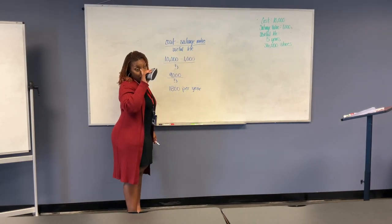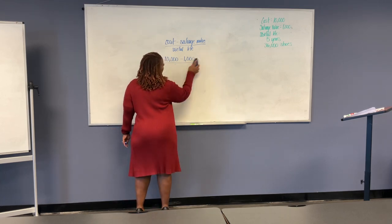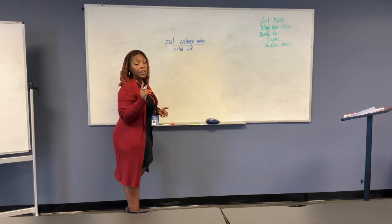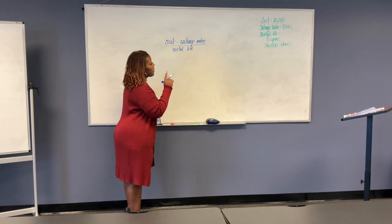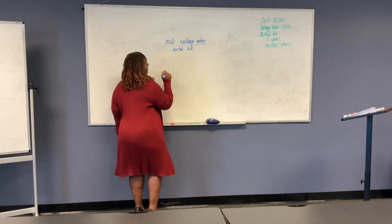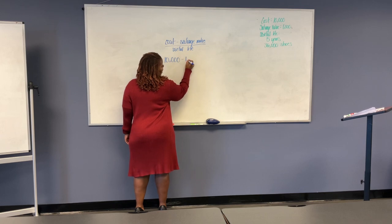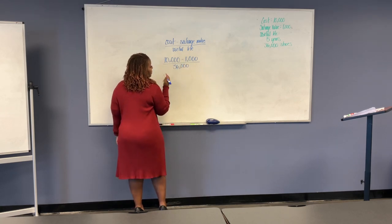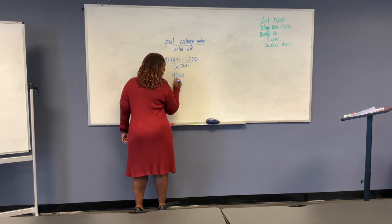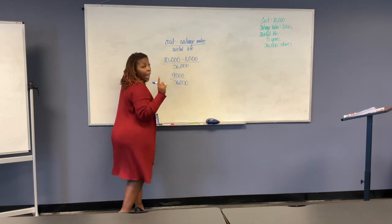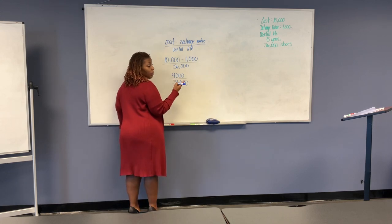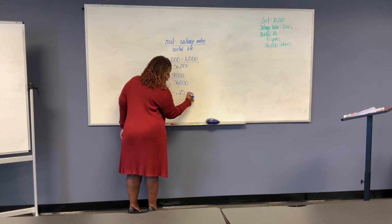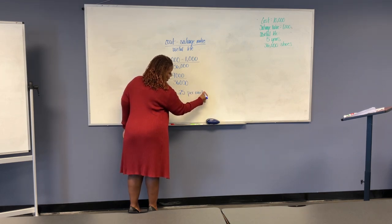Now let's go into the unit of production method. So the units of production starts off the same way. However, now we're talking about units. So instead of using five years, we're going to use the 36,000 shoes. So our cost, 10,000 minus 1,000, now over 36,000. So now you have your 9,000 divided by 36,000, which will give us an amount per unit. So in this would be shoes. So we would get, 9,000 divided by 36,000 gives us 0.25 per unit. So 25 cents.